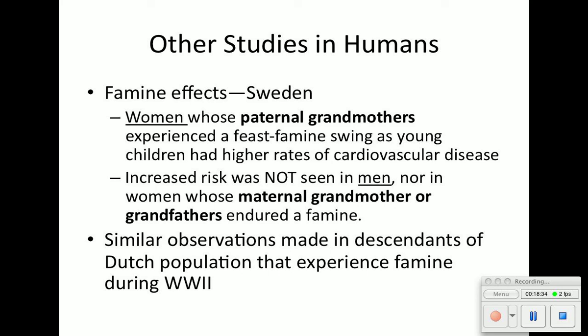Switching gears to nutrition: famine effects were found in Sweden. When they looked at women whose paternal grandmothers were in a fast-famine swing, those women had higher rates of cardiovascular disease. However, the increased risk was not seen in men, nor in women whose maternal grandmother or grandfathers endured a famine — it was only on the paternal side, which was very weird. The same observations were made in descendants of the Dutch population during World War II. No one knows exactly why, but the correlations are there — though correlation doesn't always mean causation.